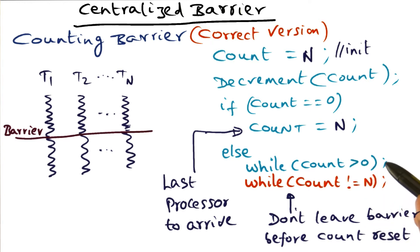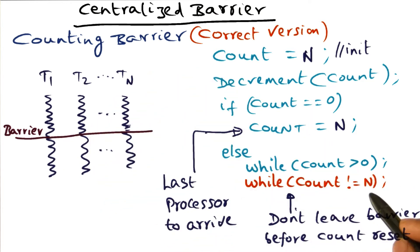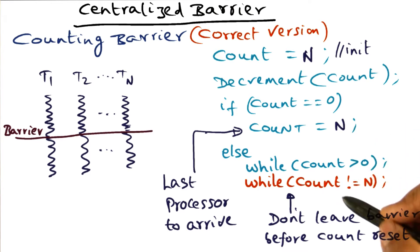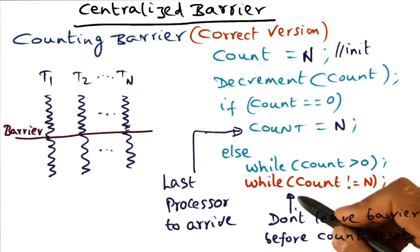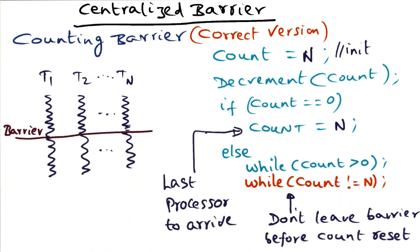We want to wait till the count has become zero. At that point, we know that the barrier is over, but we want to make sure that the counter has been reset to n by the last thread. Once that has been done, then we are ready to go on executing the code that we need to execute till we get to the next barrier.